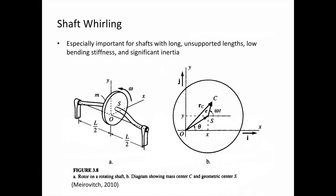When is shaft whirling important to consider? If we have long unsupported lengths of a shaft, that increases the compliance of the shaft and increases the propensity for whirling behavior. Low bending stiffness — whether due to long unsupported lengths, low stiffness material, or a small diameter shaft — will also contribute to increased whirling. Another factor is significant inertias attached to our shafts, such as a large flywheel in the middle of an unsupported length of shaft, which could be very prone to whirling behavior.